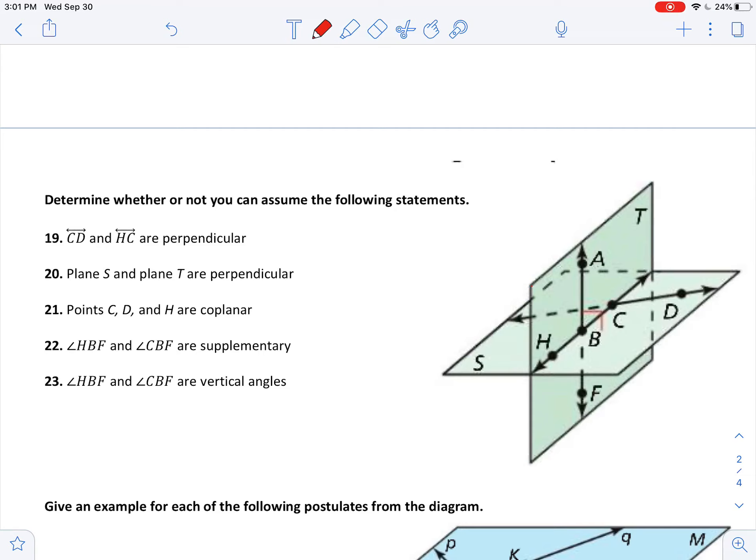Let's look at CD and HC. So CD and HC, they ask are those perpendicular? Well, if they are perpendicular, I should see a red 90-degree angle mark somewhere in this area. But that's not given to me, so I cannot assume that.